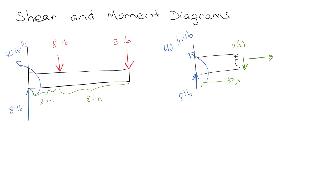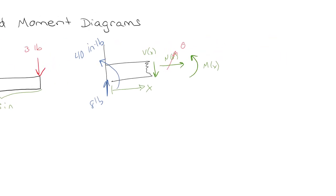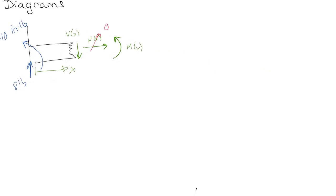There's going to be a normal force which we aren't really going to care about because these are shear diagrams, and then there's going to be this moment — M as a function of x. N is clearly zero because there's no other forces in the x direction. Let's take the sum of the forces in the y direction.